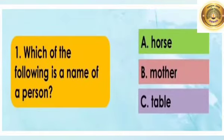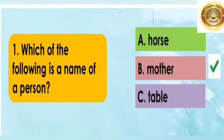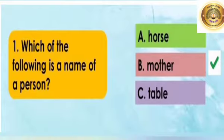Children, tell me which of the following is the name of a person? A. Horse, B. Mother, C. Table. Yes, correct. B. Mother.